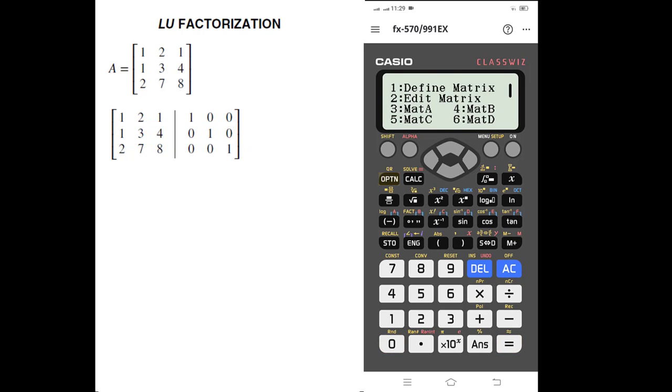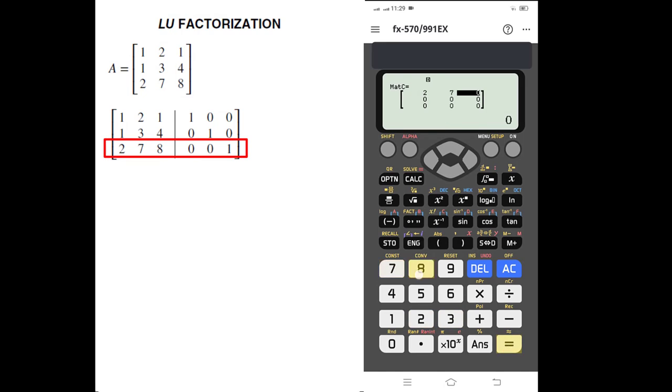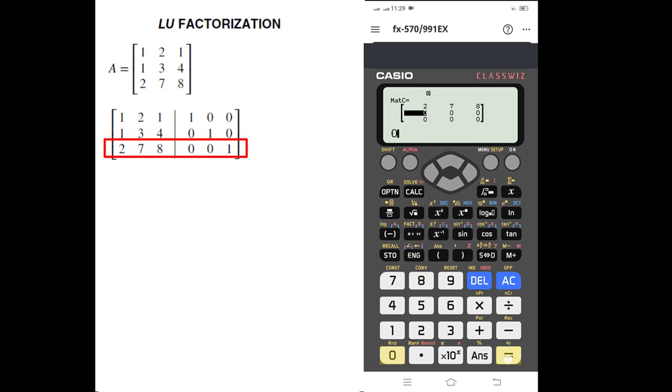Now we will define matrix C, 3x3: 2, 7, 8, 0, 0, and 1. Now we will apply the row-wise operations.